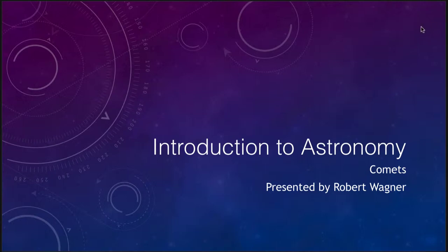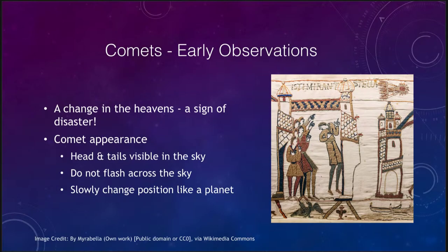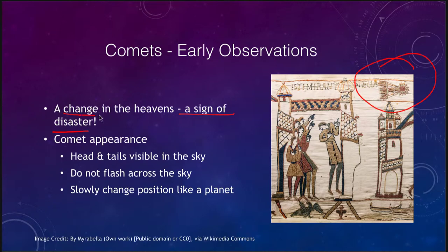Let's look at some of the early observations first. Comets have been seen for thousands of years. They can be very easily visible in the sky — here is one shown in a tapestry. One of the problems was that it was seen as a sign of disaster, because it was a change in the heavens. Even just five hundred to a thousand years ago, any sign of change in the heavens was seen as a sign of disaster coming.